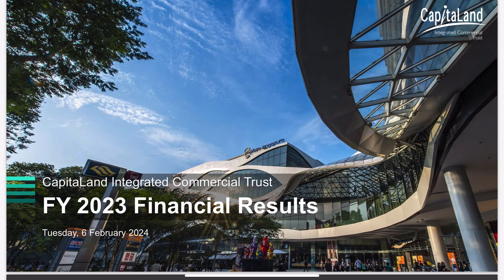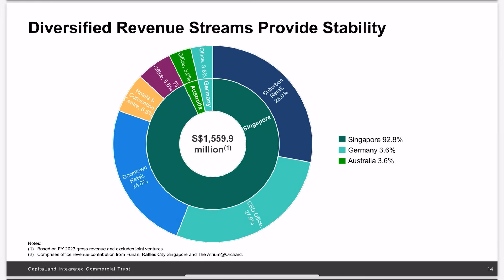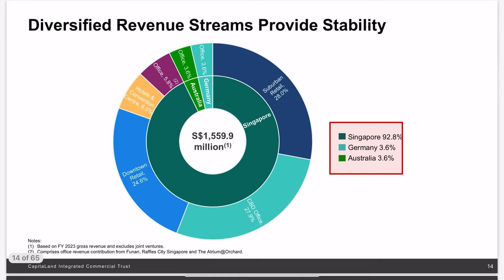Let's move on to the next CapitaLand REIT — CapitaLand Integrated Commercial Trust, or CICT. For those new to CICT, they are a REIT focused mostly in Singapore at 92.8 percent, while Germany and Australia properties are only at 3.6 percent each. They are mostly retail, office, and hotel properties.